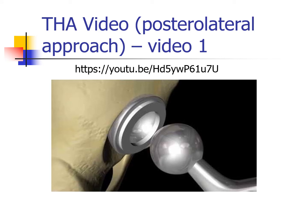Before moving on to postoperative rehabilitation, take a moment to watch a brief video showing a total hip arthroplasty through a posterior lateral approach. This is an important approach done frequently. It accesses the hip posteriorly by splitting the gluteus maximus, taking down the deep rotators, and accessing the hip through the back. The concern with this approach is that there are movement precautions — specifically flexion, adduction, and internal rotation. As you watch, consider the implications for rehabilitation.